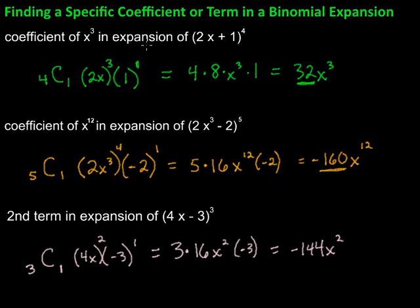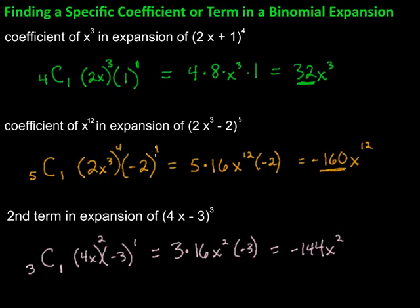Finding a specific coefficient or term in a binomial expansion: use the fact that all terms have a common layout. Lay out n, C, and whatever r is. Look at a and b to determine what exponent you need to get the target term. Once you have that exponent, the two exponents must add up to n, so you can find both. Then just calculate to find your entire term or just the coefficient. I hope this was helpful — keep working hard on your math, you can do it!